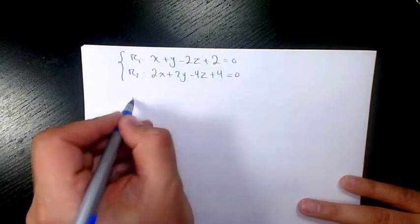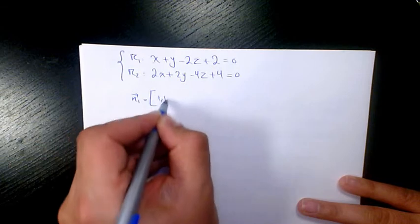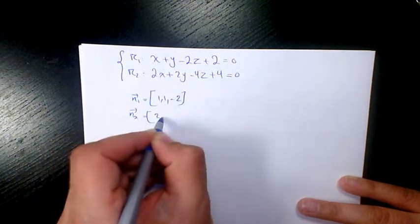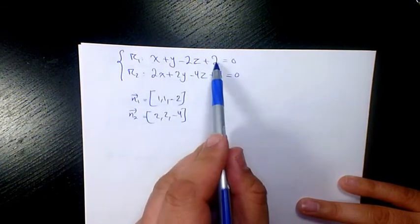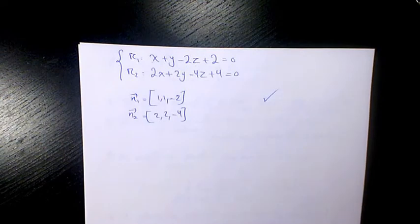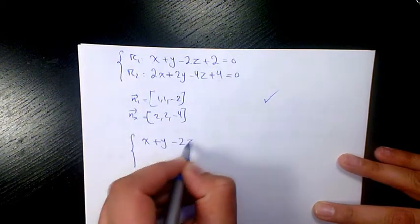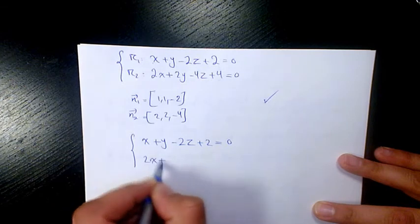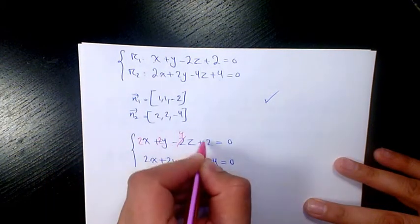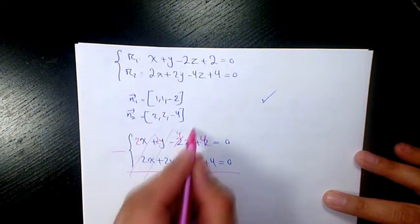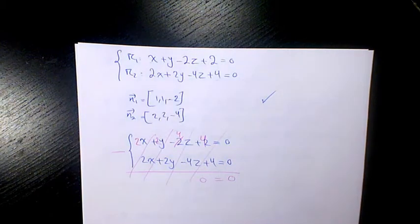The next example has n1 equal to (1, 1, -2) and n2 equal to (2, 2, -4). As you can see, n2 is 2 times n1. Multiplying the first equation by 2 gives (2, 2, 4, 4) and when you subtract, everything is zero. So for any values of x, y, and z these equations balance, meaning we are dealing with parallel and coincident planes — there are infinitely many intersections.